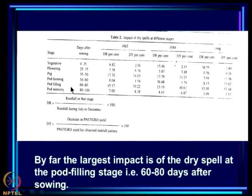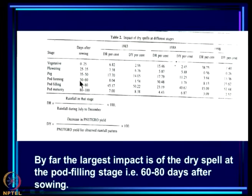What are the results? At different stages: the vegetative stage is up to 25 days after sowing, flowering stage is 25 to 35 days, peg formation is 35 to 50 days, pod forming is 50 to 60 days, pod filling is 60 to 80 days, and pod maturity is 80 to 100 days.